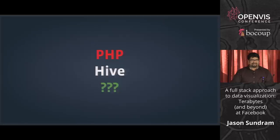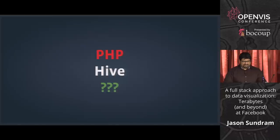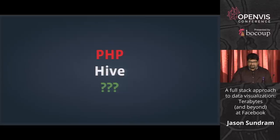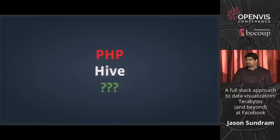Facebook has some ridiculous number they've published — like 300-plus petabytes of data — and I don't even know where that's stored. In Hive, it turns out, a lot of it, which is super powerful but also really slow. And my SQL skills were dodgy at best.